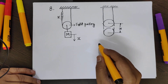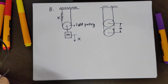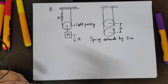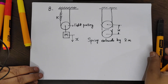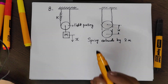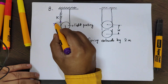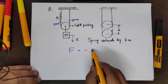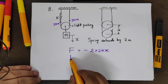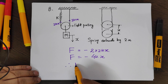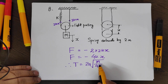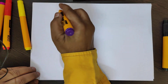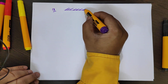The spring extends by 2x, so the spring force is 2kx on each side. The net force acting on the block is F = -2 × 2kx = -4kx. Hence the time period is 2π√(m/4k).